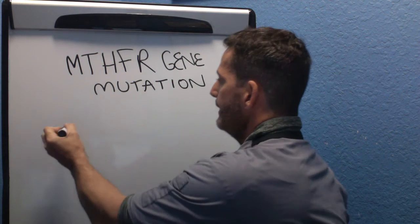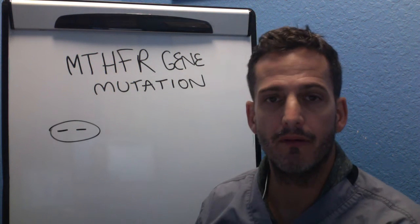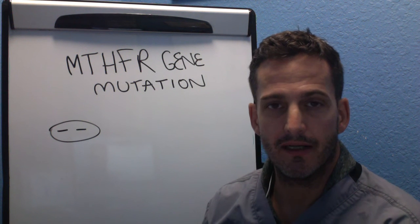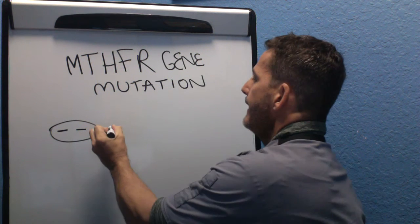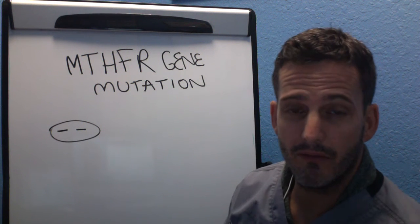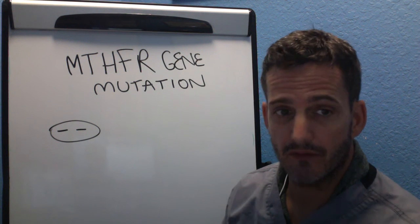So what does that exactly mean? Whenever you get a genetic test back from 23andMe, or Ancestry sites, or even LabCorp, typically they're testing for MTHFR and many other genes. There's 23,000 genes that code for different enzymes, and MTHFR is just one of them.